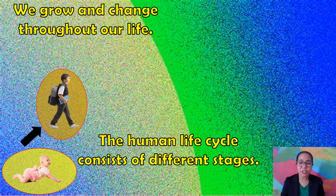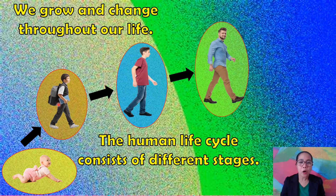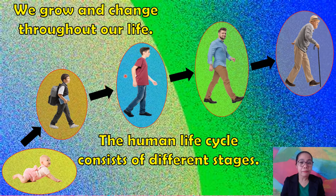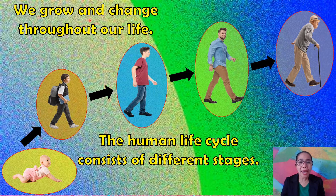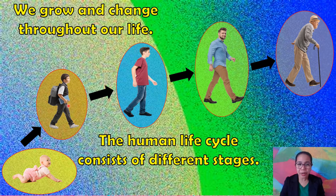Now, if you take a look at these pictures here, you can see that there is a baby going to a boy, then a big boy, or a little man, then to a man, and then to an old man. These are the different stages of the human life cycle. We grow and change throughout our life. The human life cycle consists of different stages. What are they? Let's try to find out.